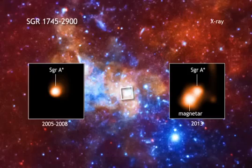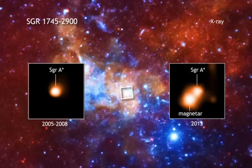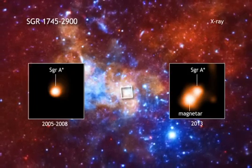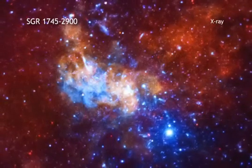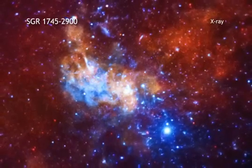A new study uses these observations to reveal that the X-ray output from SGR 1745-2900 is dropping more slowly than for other magnetars, and its surface is hotter than expected.